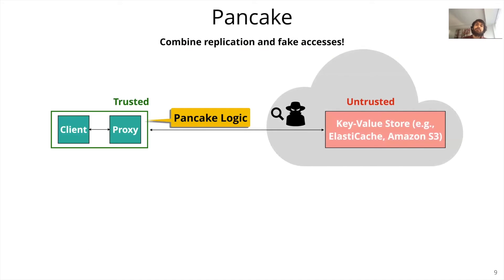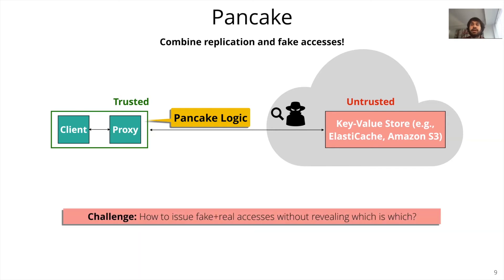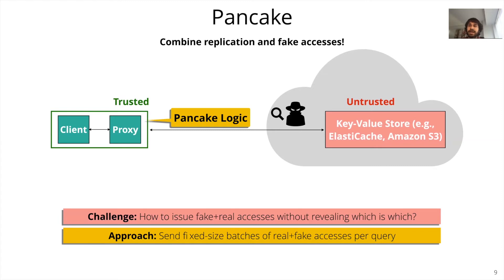In Pancake, we place the logic for frequency smoothing in a trusted proxy that forwards all requests on behalf of the clients. As queries arrive at the proxy, one challenge that needs to be addressed is issuing queries with our frequency smoothing approach in a manner that ensures an observer can never distinguish between real and fake queries. The approach we take is to always issue queries in fixed-size batches comprising a mix of real and fake accesses with equal probability.